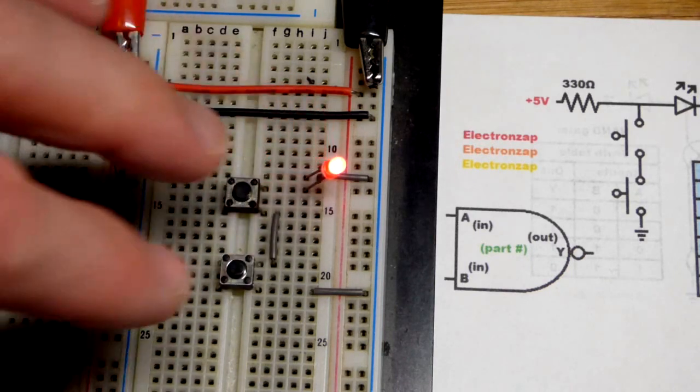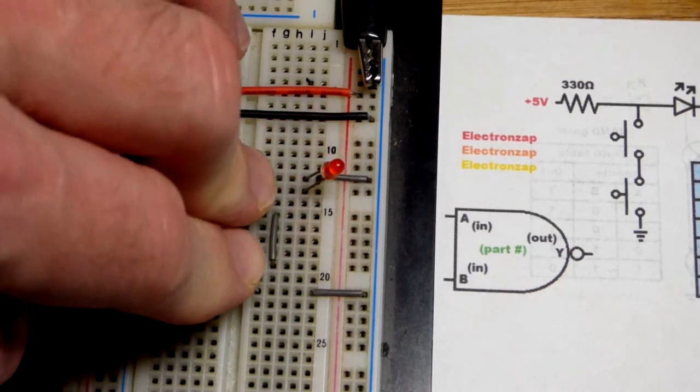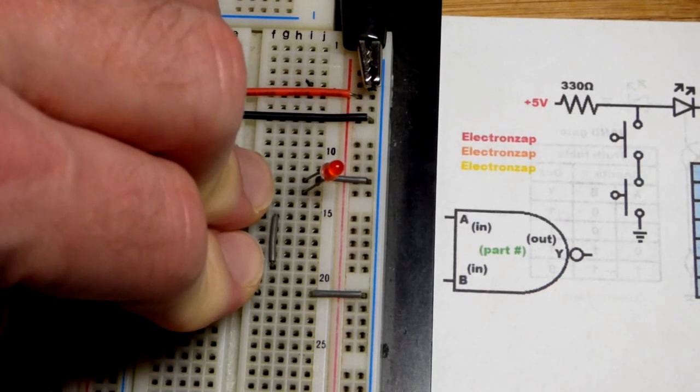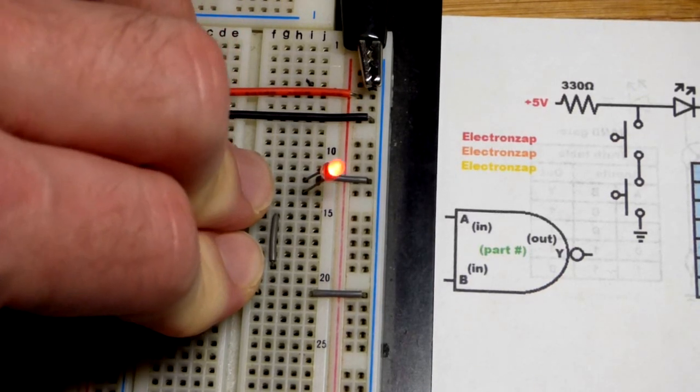Only way to turn the LED off in this circuit is to turn both switches on when you get a good connection like that.